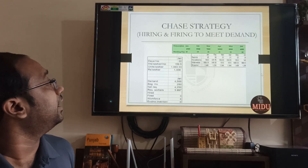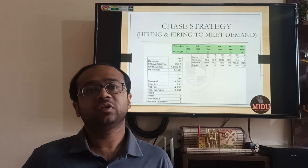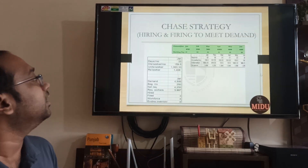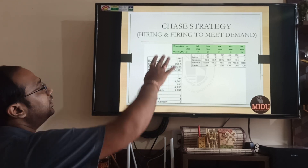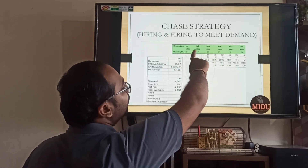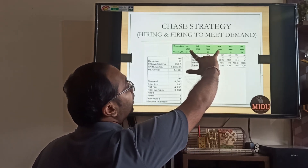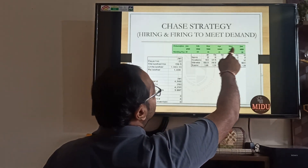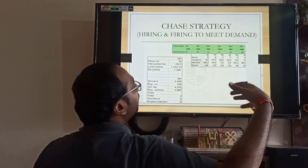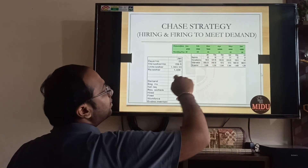Now in Chase Strategy let us discuss an example of hiring and firing to meet demand. There are 3 alternatives: under-time/overtime, variable number of shifts, and hiring and firing (layoff). We are considering the third. In the question you are given 6 months — January to June — with demand: 4500, 5500, 7000, 10000, and then it reduces. We also have days per month, hours per worker per month, and units per worker. For example in January, one worker can make 1063 units.